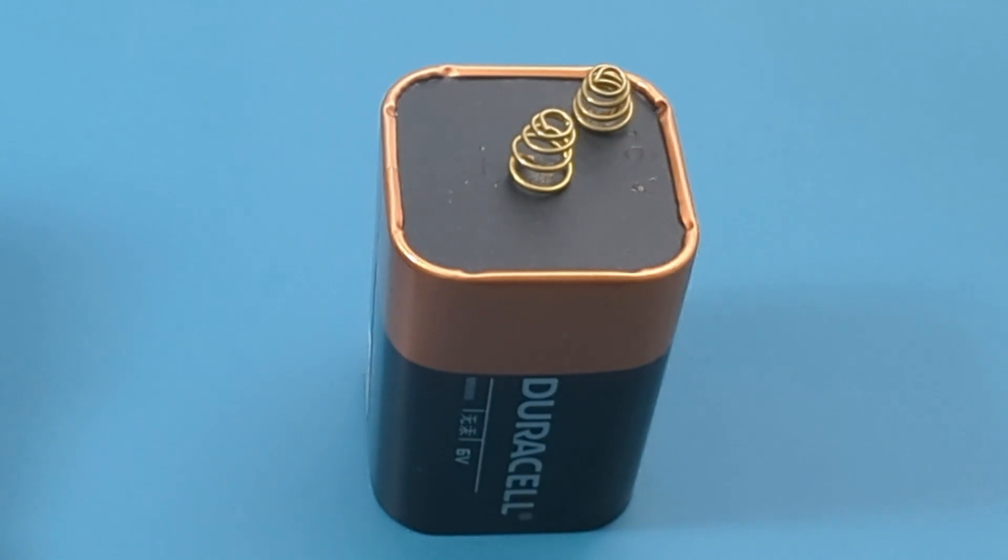DC voltage, like from a battery, is constant and flows in one direction. Check out my other video in the description to see me test a 6-volt battery with a multimeter.